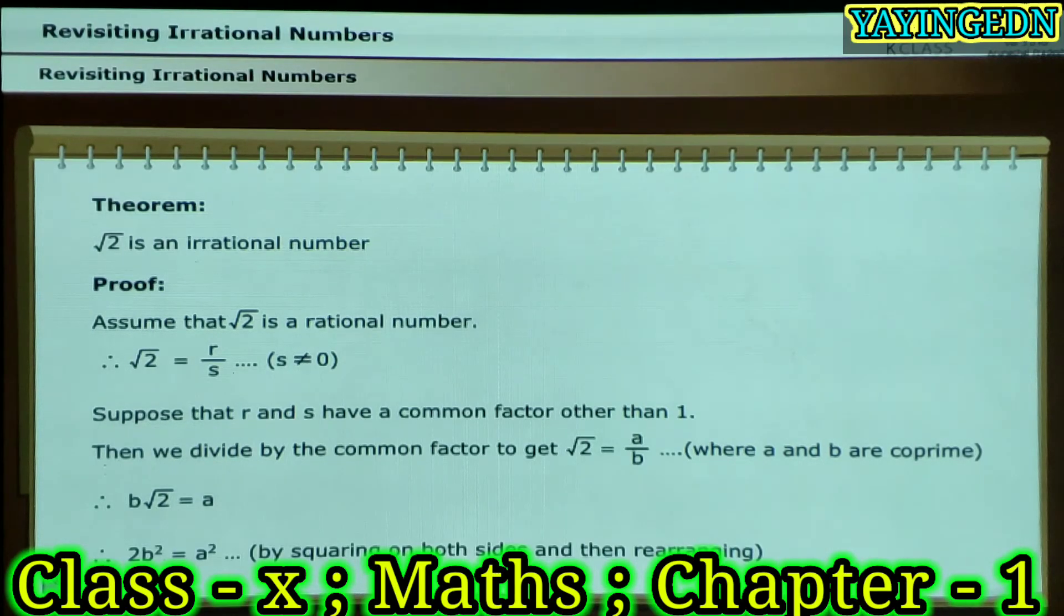By squaring on both sides and by rearranging, we get 2B squared is equal to A squared.